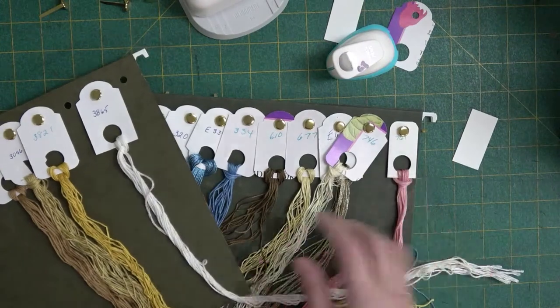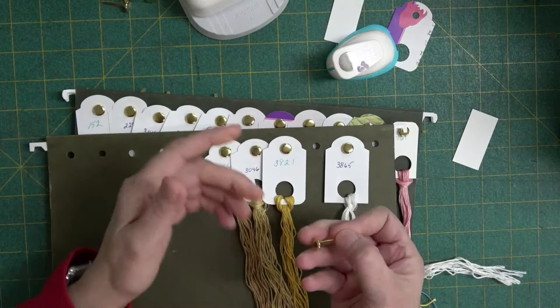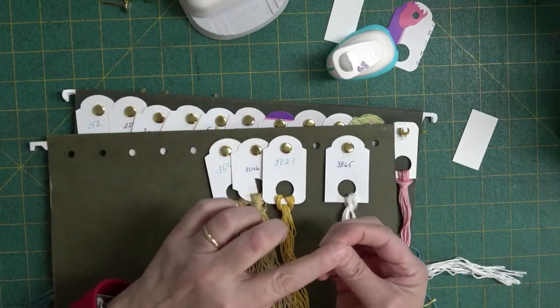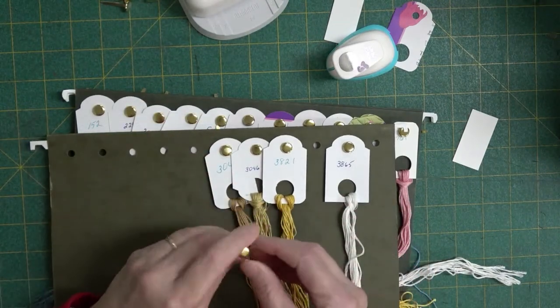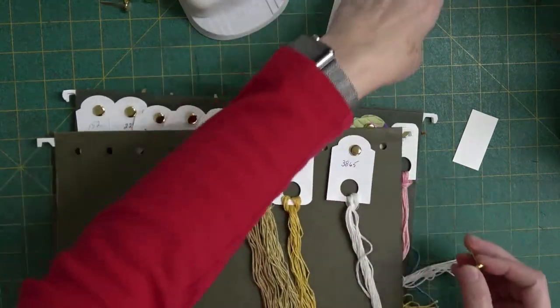So you just take some brads. These brads are kind of big—I think they're an inch. You don't need them that big. You just need this top to be big enough for whatever hole you've punched in your tags.